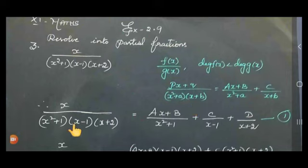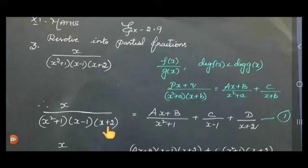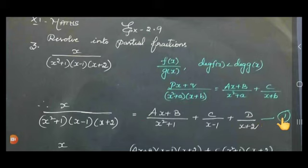Next, for the linear factor x - 1, since we already used A and B, we write C divided by x - 1. Next, x + 2 is also a linear factor, so we write D divided by x + 2.